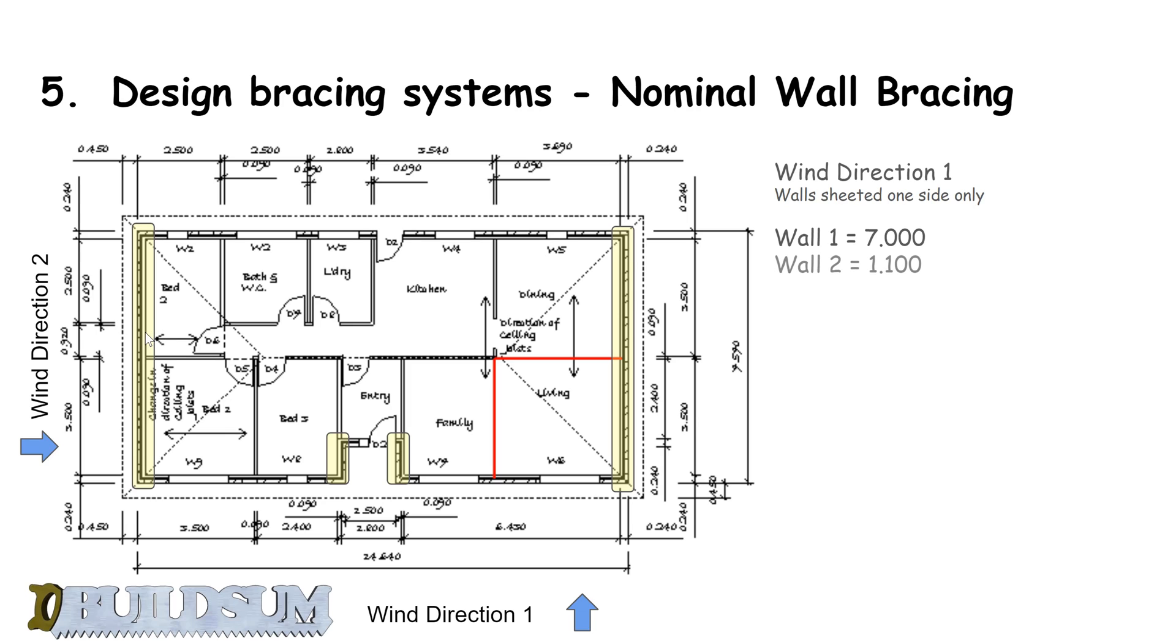So we just work out the length of those walls. Wall one, the long wall on the left—seven meters long. Wall two, next to the door, 1.1 meters. Wall three, 1.1. Wall four, seven meters. We add them up, gives us a total length of 16.2 meters. We times that by our bracing capacity per meter, which was 0.45 for single-sided walls. That gives us a total bracing capacity of 7.425 kilonewtons.